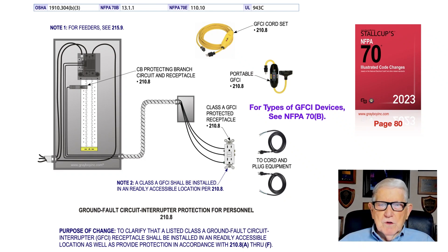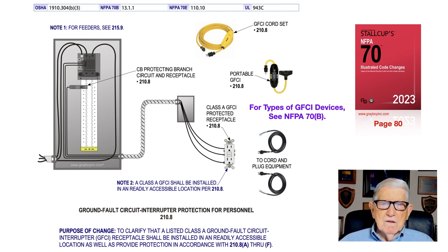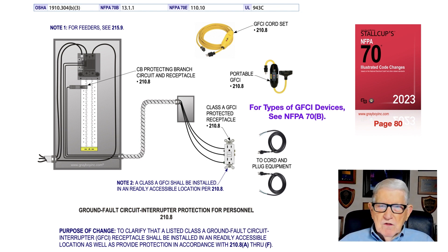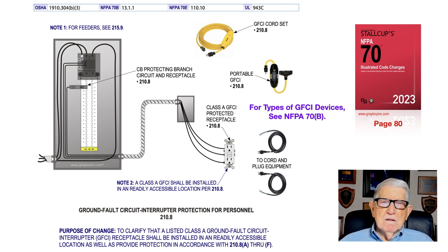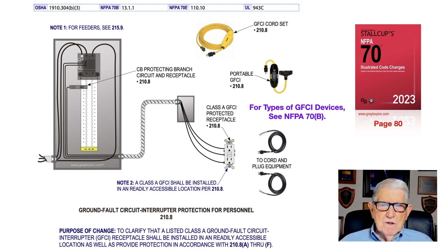This illustration deals with ground fault circuit interrupter protection for personnel in accordance with 210.8. We're on page 80 of the NEC. The purpose of the change was mainly to clarify that a listed Class A ground fault protection receptacle should be installed in a readily accessible location, as defined in article 100 of the code.